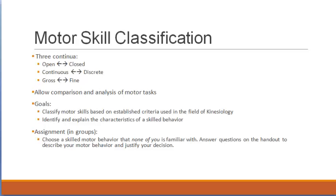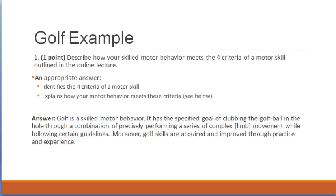According to the definition in the lecture, a skilled motor movement must meet the following criteria: one, it has to have a goal; two, it has to be voluntary as opposed to a reflex movement; three, it has to be acquired through experience and practice; and four, it has to involve voluntary limb movement. When you answer question one, you have to be formal, scientific, and brief — not just one sentence saying golf is a skilled behavior. You have to explain why, based on the definition and the four criteria.